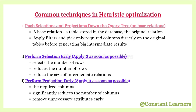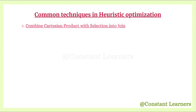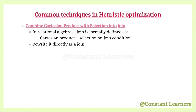The next common technique in heuristic optimization is to combine a Cartesian product with selection into a join. In relational algebra, a join is usually formed by combining a Cartesian product and a selection on a join condition. So if a query contains a Cartesian product followed by a selection, rewrite it directly as a join.